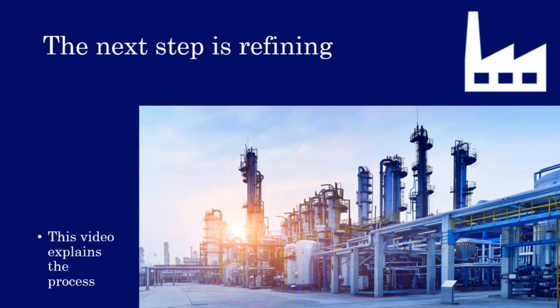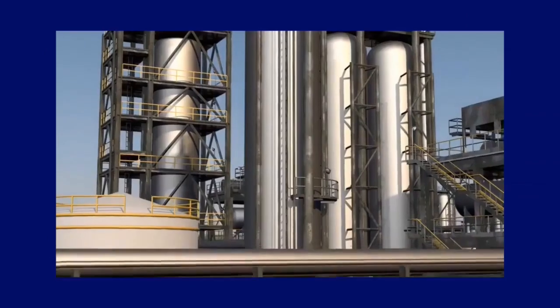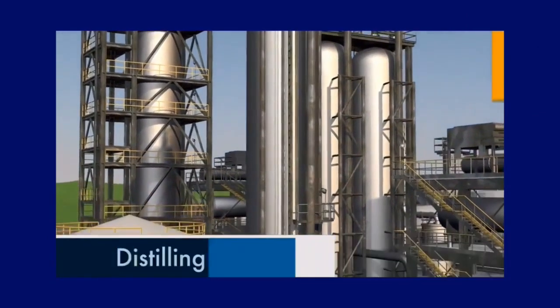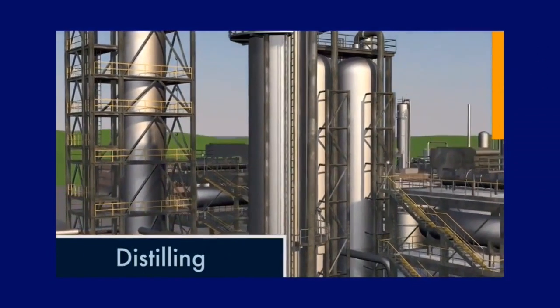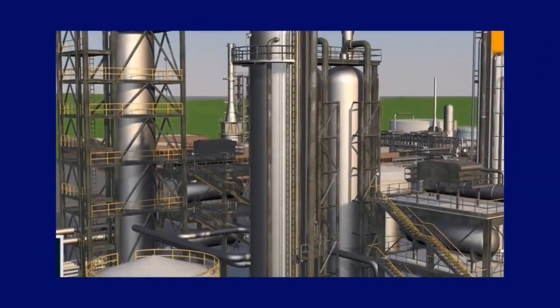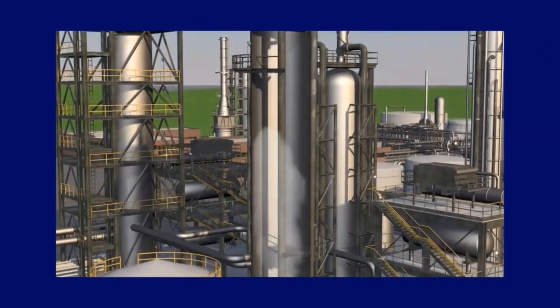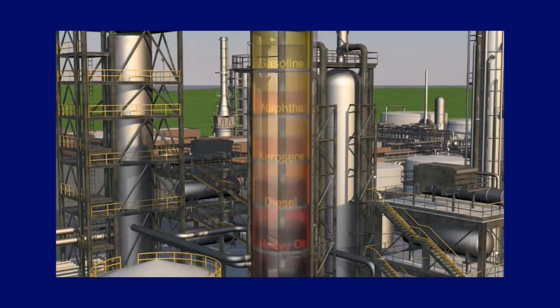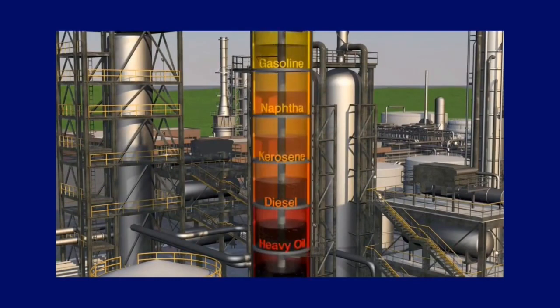After extraction comes refining. Refining begins with a process called distilling. After oil is superheated, it becomes vapor. The vapor is fed into the distillation unit. As it rises and cools, the vapor turns back into a liquid. Using stacks of trays, the liquid is easily collected and separated by weight.